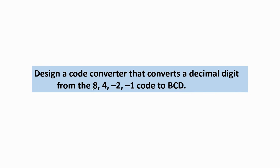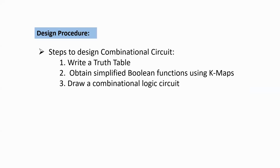To design the circuit diagram for the code converter, we should follow the design procedure. The design procedure has different steps. First, write a truth table based on the given data. Second, obtain simplified boolean functions using K-maps. Third, draw a combinational logic circuit for the code converter. The code converter is a combinational logic circuit because the output depends only on the present values of the inputs. The code converter converts the 8-4-minus2-minus1 code to BCD code.